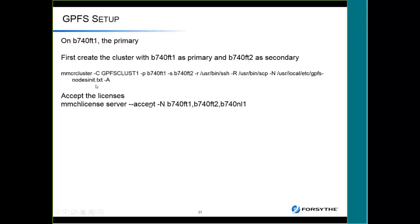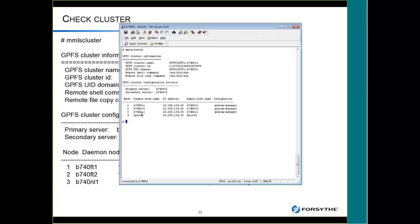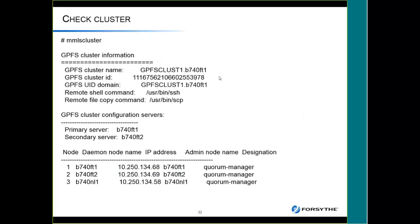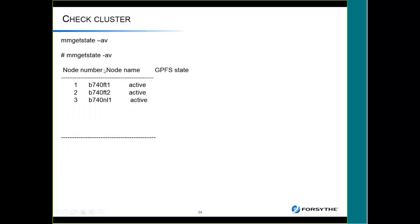At this point we've built a cluster with three nodes but nothing else in it. If you do an MMLS cluster, it shows the cluster name, remote shell and copy commands, primary and secondary. Do an MMLS config to see default parameters — page pool defaults and so on. There are no file systems yet. It's also good to do an mmgetstate -av, which gives you the status of each node in the cluster — here you can see all three server nodes are active.